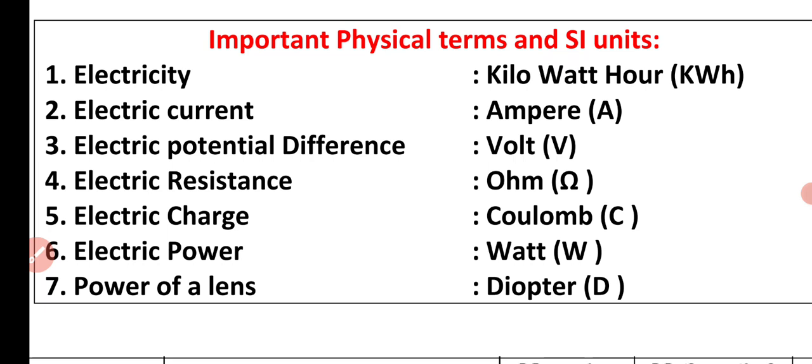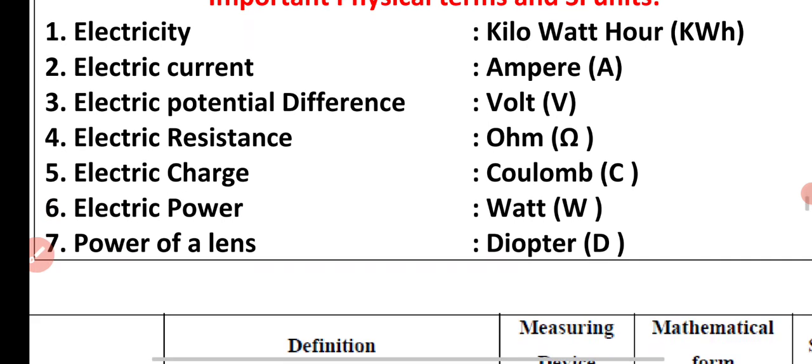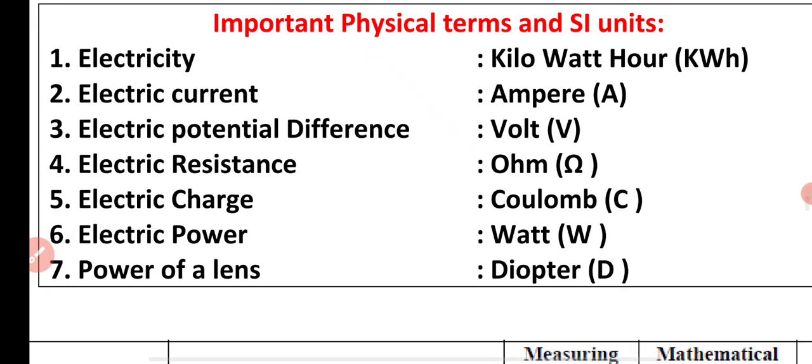Electrical potential difference is EMF - electromotive force. SI unit of electric resistance is ohm. SI unit of electric charge is coulomb (C). SI unit of electric power is watt (W).